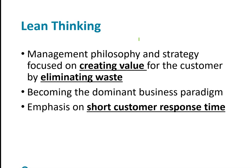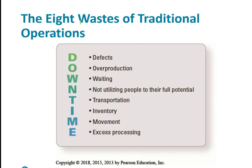This brings in something called lean thinking — a philosophy and strategy focused on creating value by eliminating waste. It emphasizes a short response time for the customer. Eight types of waste include buying, storing, and moving inventories — covering inventory movement, transportation, and waiting. Producing poor quality products and services leads to defects, overproduction, and excess processing — all captured in an acronym for 'downtime.'